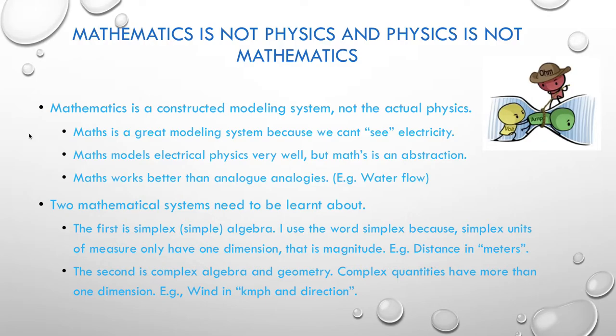Two mathematical systems need to be learned about. The first is simplex or simple algebra. I use the word simplex because simplex units of measure only have one direction, and that is magnitude. For example, distance is measured in metres. The second is complex algebra and geometry. Complex quantities have more than one direction or dimension. For example, wind in kilometres an hour and direction. If you watch the weather forecast, they will tell you that you have a northeaster at 15 kilometres an hour tomorrow. That means its direction is north east and its magnitude will be 15 kilometres an hour. That is a complex quantity.